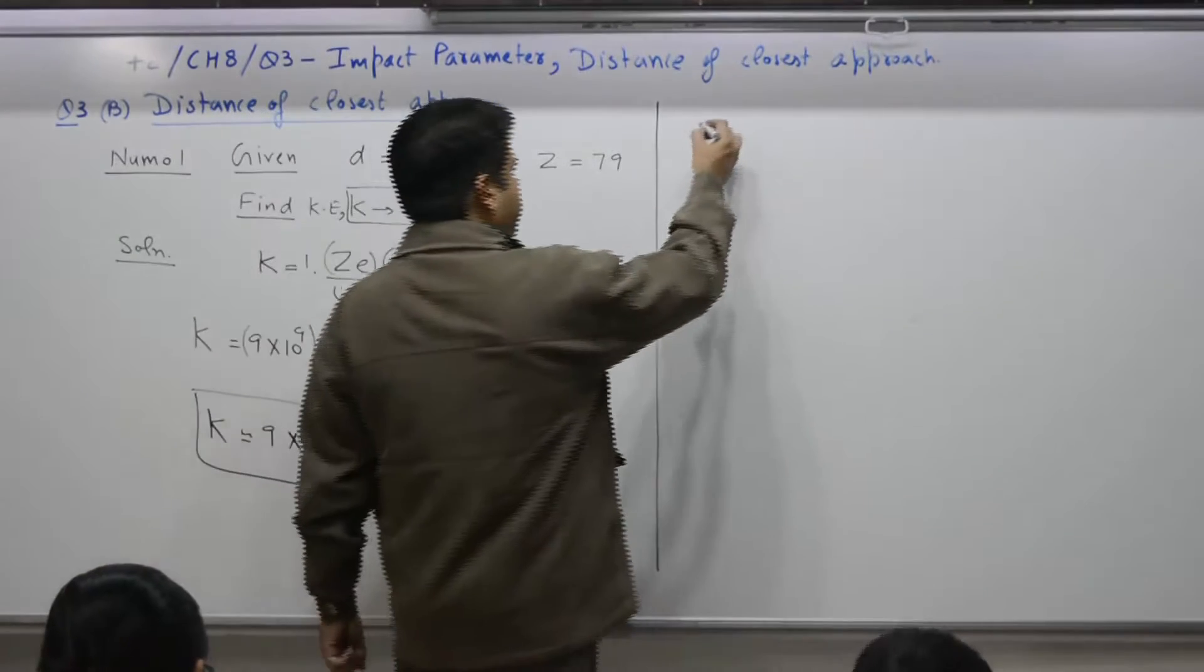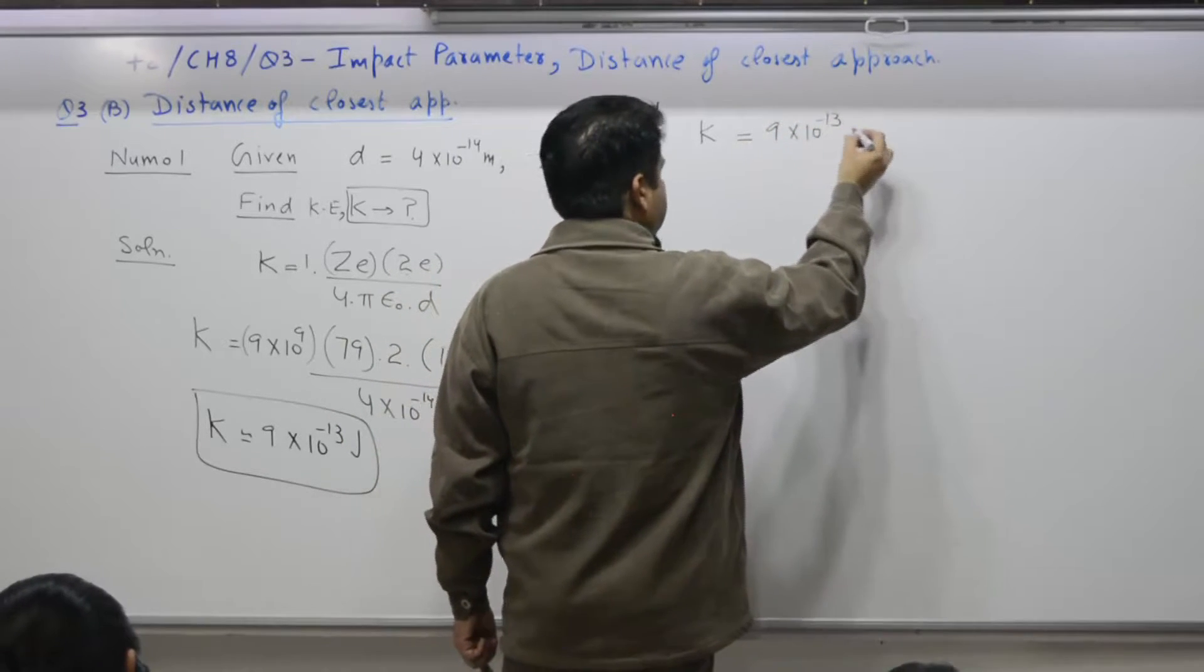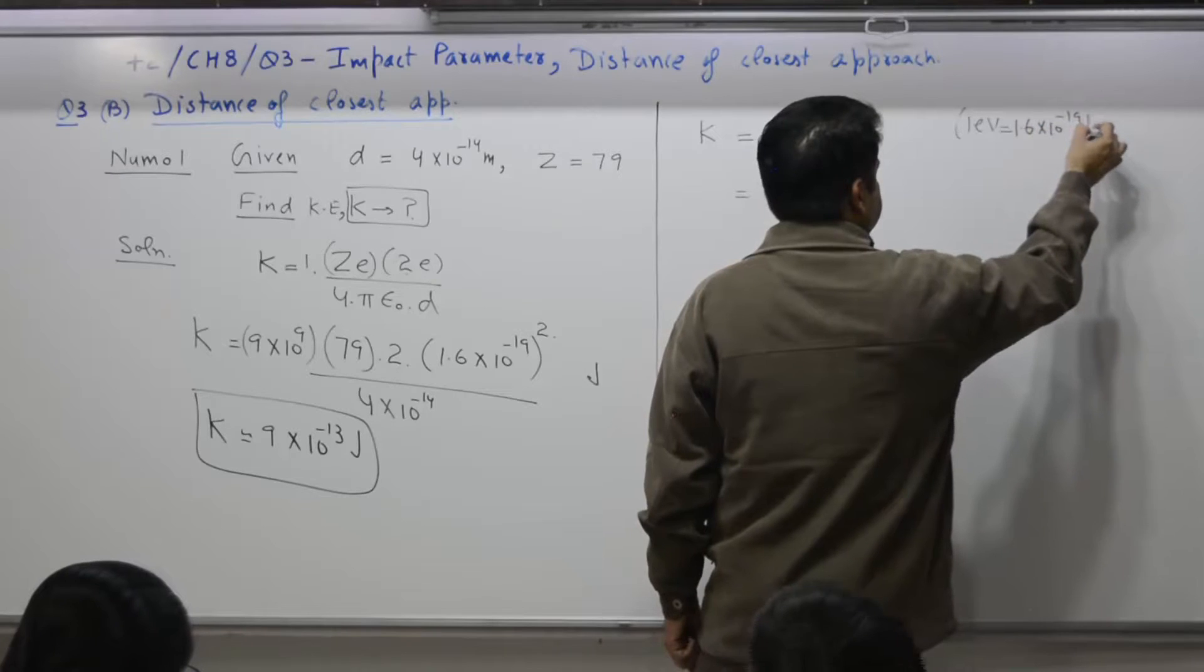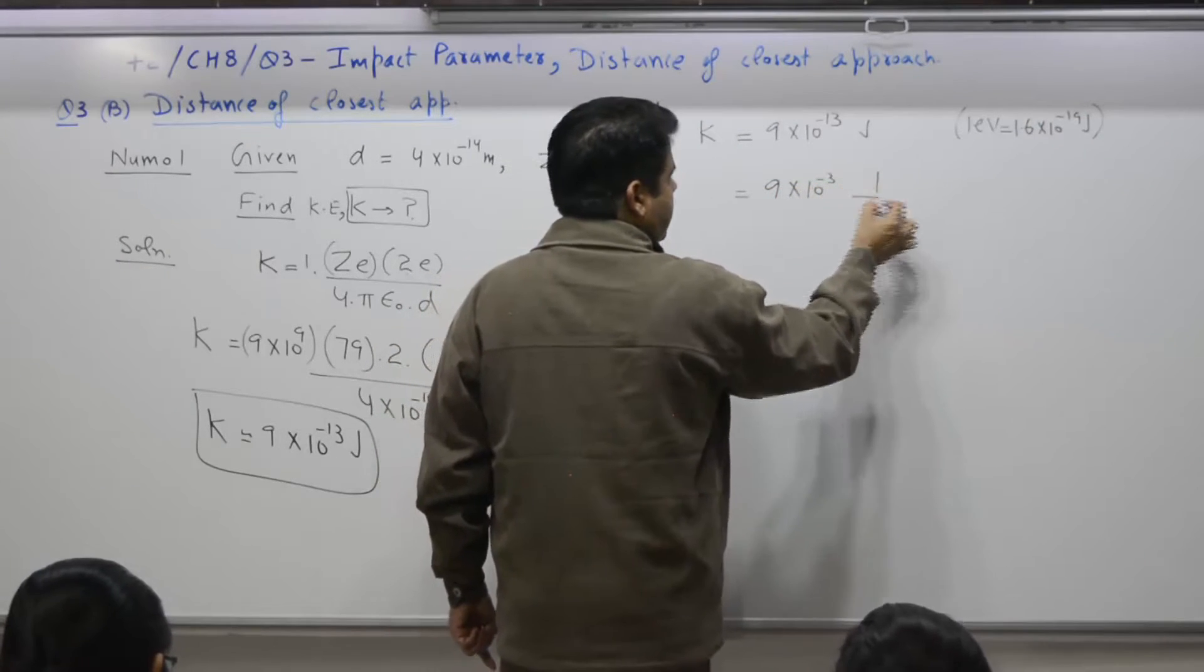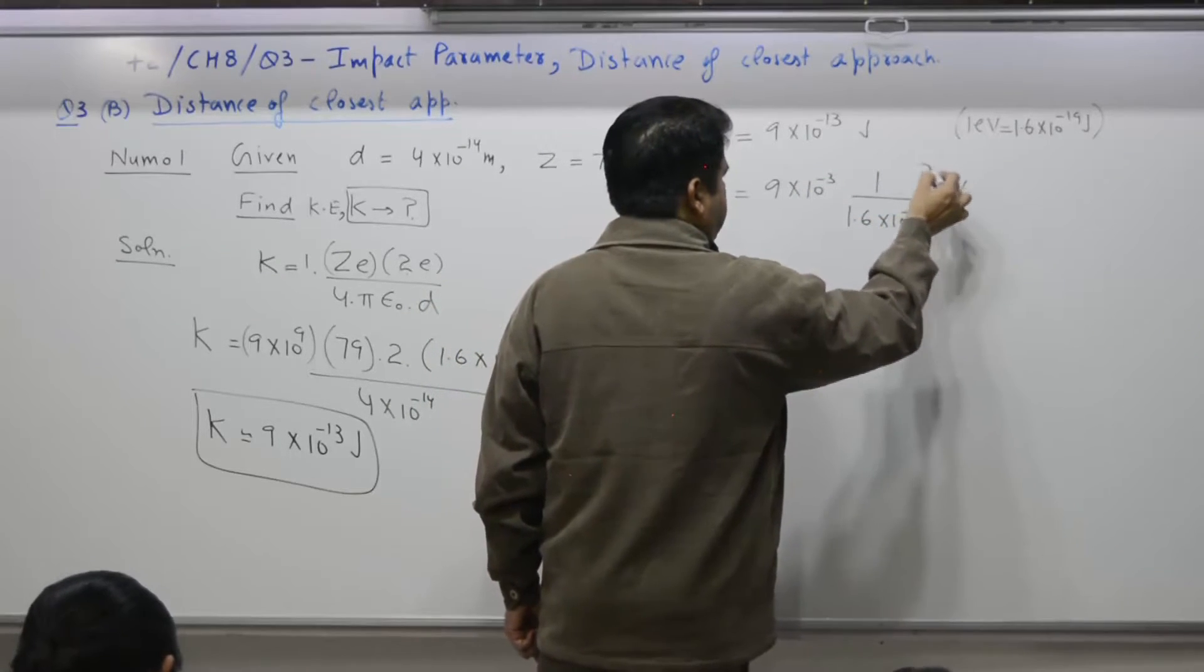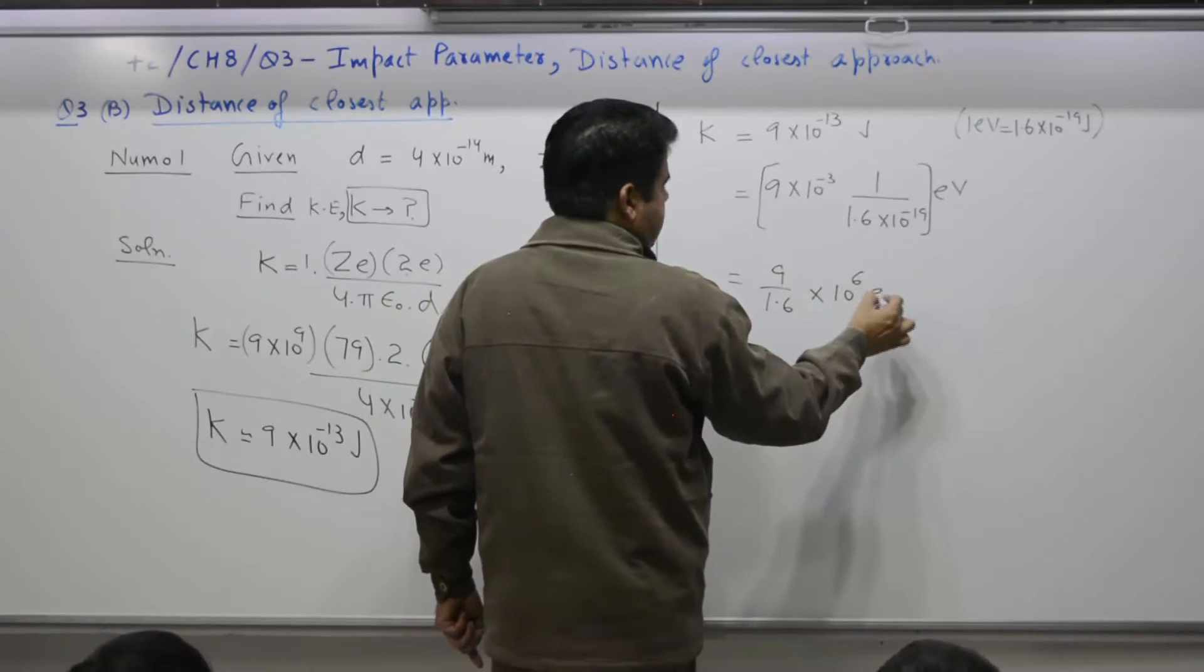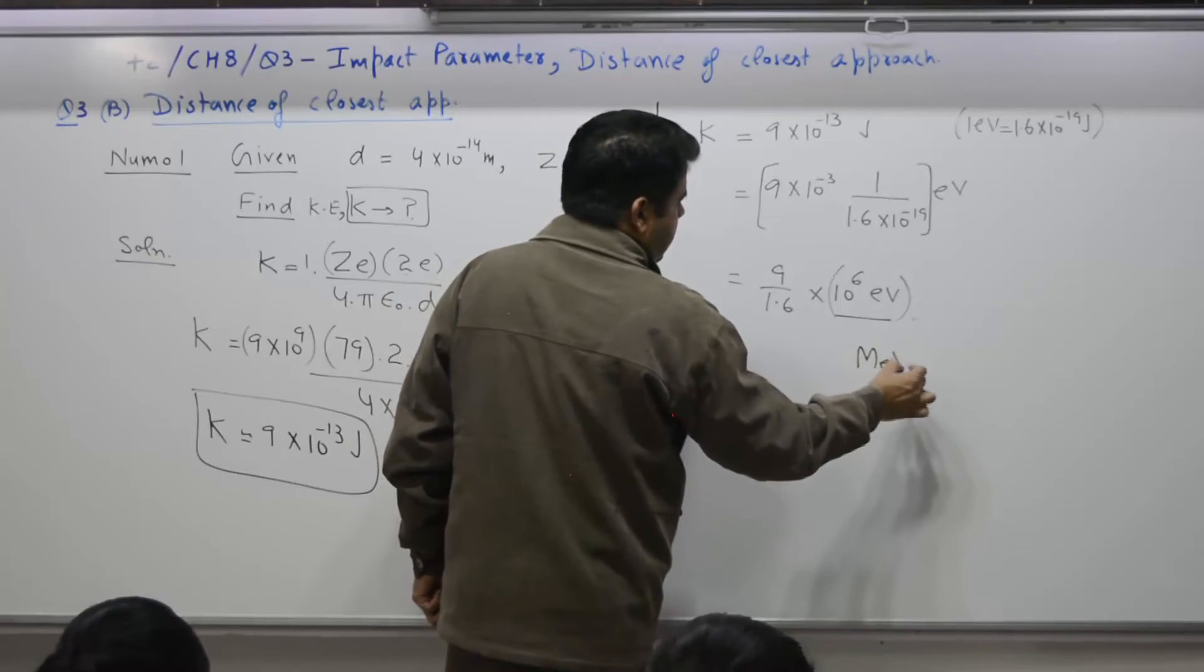But we want kinetic energy K in terms of electron volt. Yes. The relationship. 1 electron volt is 1.6 into 10 raised to the power minus 19 joule. So 1 joule is what? 1 over 1.6 into 10 raised to the power minus 19 so many electron volts into 10 raised to the power 6 electron volt. 10 raised to the power 6 electron volt is what? Yes. Mega electron volt.